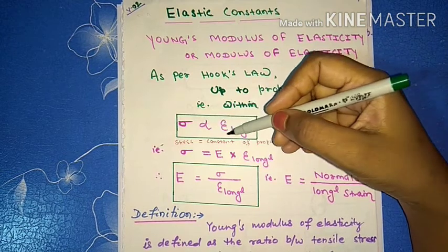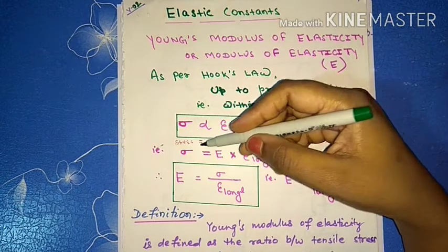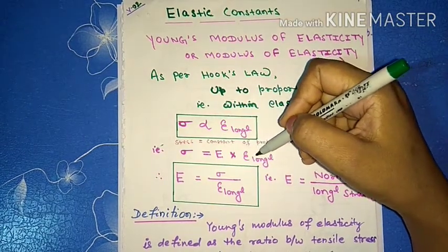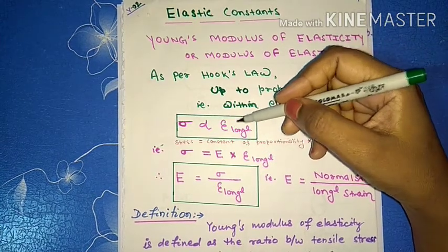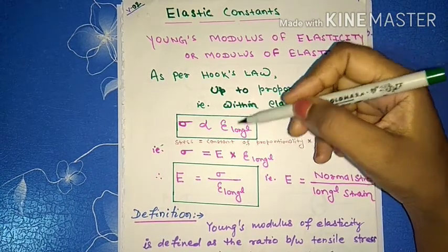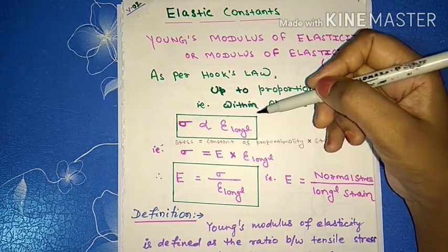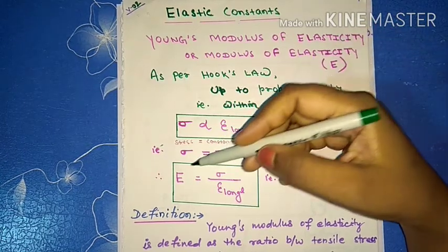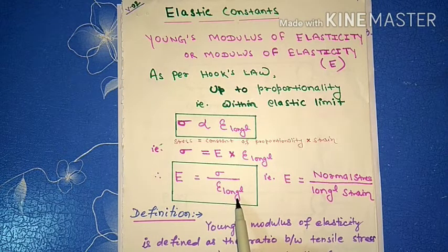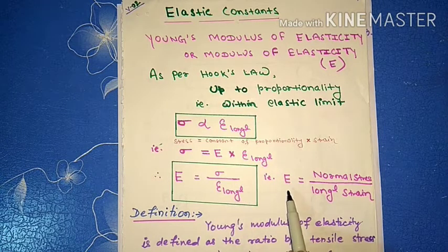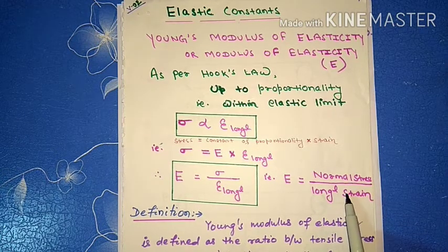Mathematically, stress is equal to the constant of proportionality multiplied by strain. That is, stress is equal to E into longitudinal strain. The proportionality constant E is called Young's modulus of elasticity. Therefore, E equals sigma divided by longitudinal strain — that is, Young's modulus E equals normal stress divided by longitudinal strain.